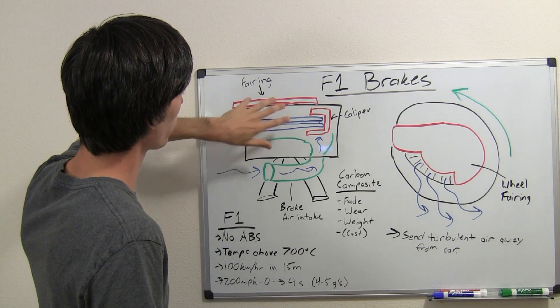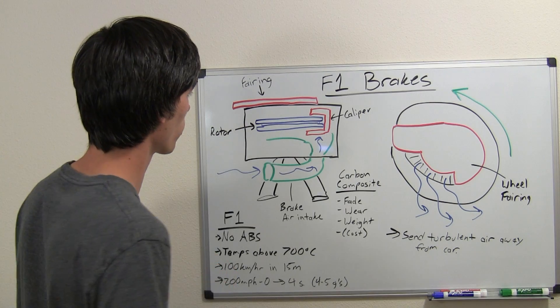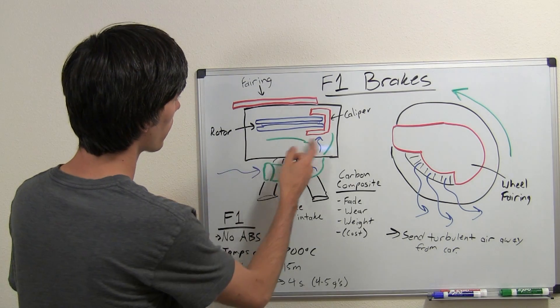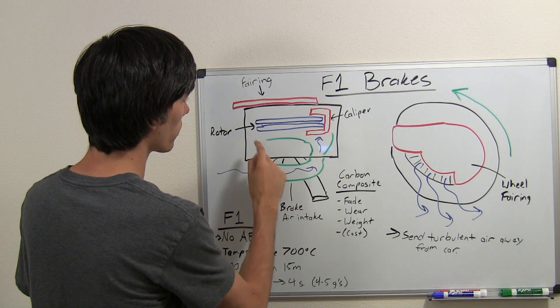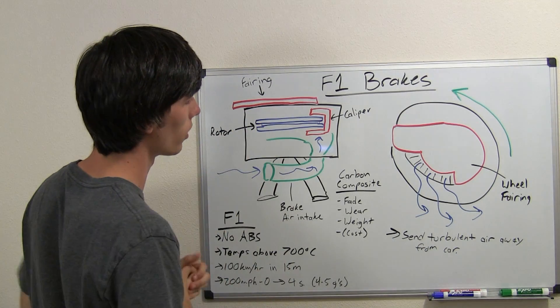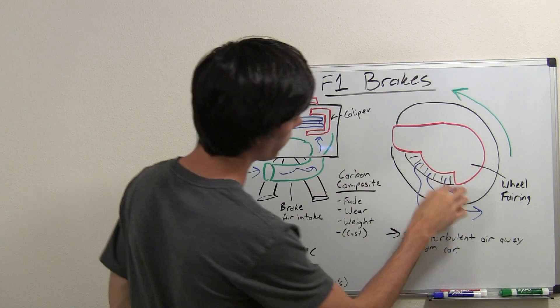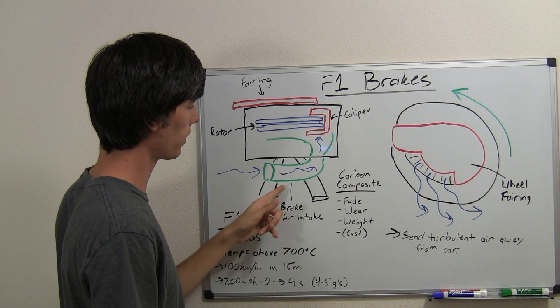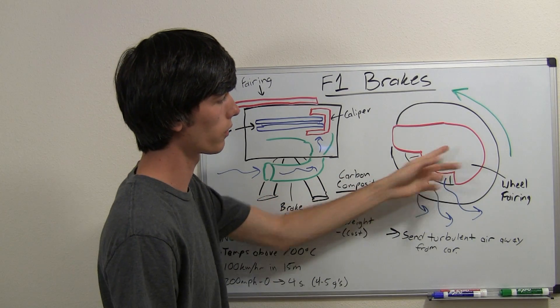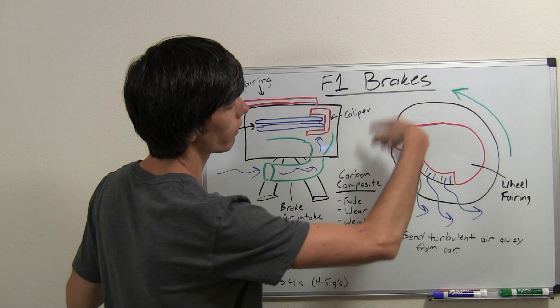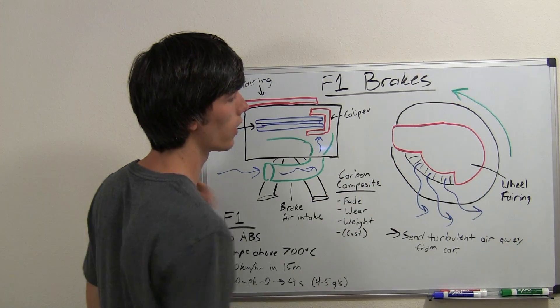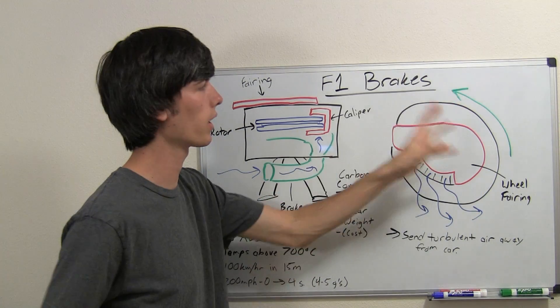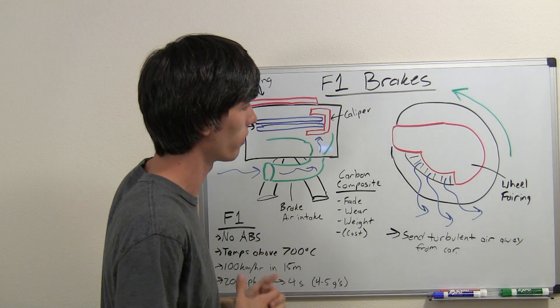Also you've got this wheel fairing on the outside and that also plays a pretty important role. So you've got that air that's going to be spooling around the brake disc, but that air has to go somewhere. So you've got this wheel fairing that directs the flow of the air. Now previously they had these air intakes without the wheel fairings and what would happen is you'd have the air dissipating all over the tire and you'd create this turbulent pocket of air and mess with the aerodynamic performance of the vehicle.